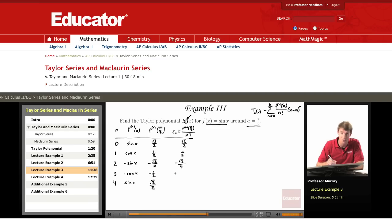3 factorial is 6, so we get -1/2 divided by 6, that's -1/12. And 4 factorial is 24, so we get √3/2 divided by 24, so √3/48.